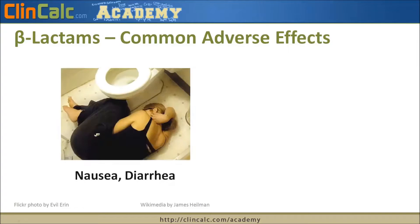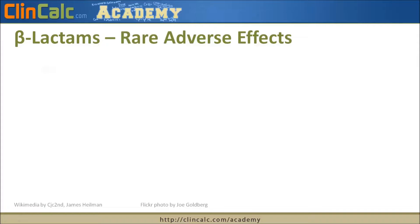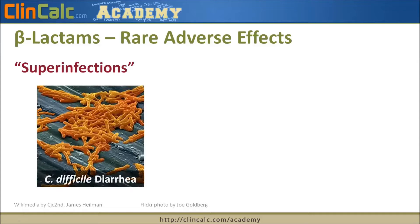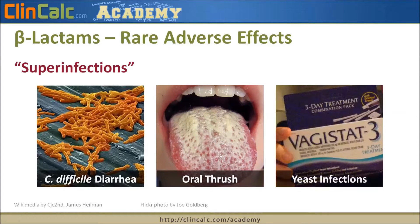Common adverse effects of beta-lactam antibiotics include nausea and diarrhea, and skin rash — both fairly common with any antibiotic. Rare adverse effects include superinfections such as Clostridium difficile diarrhea, where we kill off good gut bacteria leaving only C. difficile, which can cause severe watery infectious diarrhea. We can also see oral thrush, a fungal infection on the tongue caused by Candida — called candidiasis — and yeast infections from overgrowth of yeast in the vagina when good bacteria are killed off.